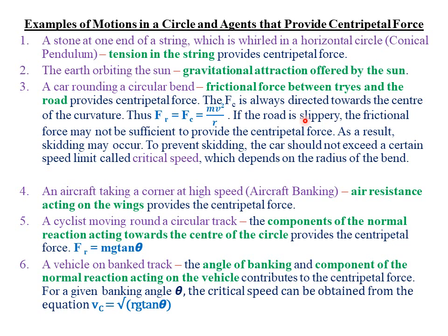If the road is slippery, the frictional force is very low and may not be sufficient to provide the centripetal force. As a result, skidding may occur or the vehicle is likely to slide off the road. To prevent skidding, the car should not exceed a certain speed limit, which we call the critical speed. This critical speed depends on the radius of the bend.